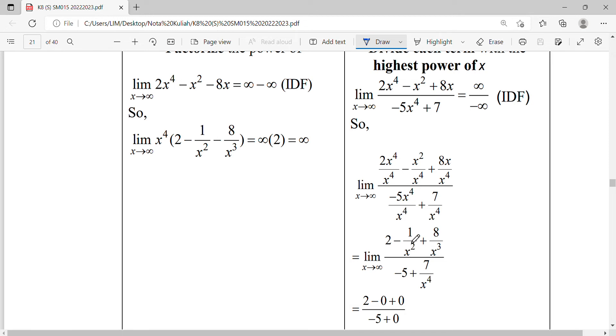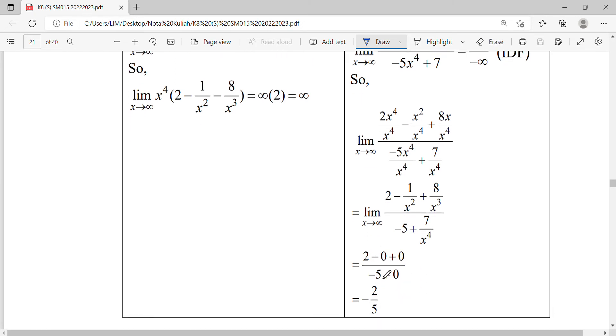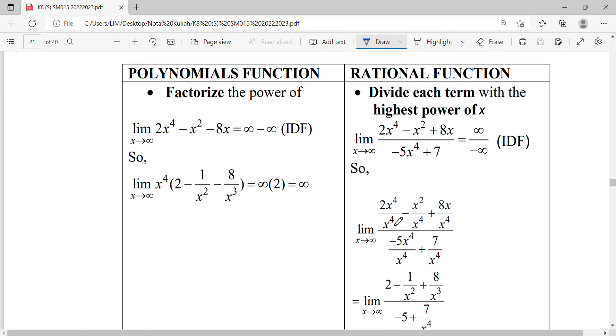A value divided by infinity is zero, so you get the answer 2 over negative 5. Our operation of limit at infinity: one over infinity is zero. If you substitute and cannot get an answer, we divide by the highest power of x.